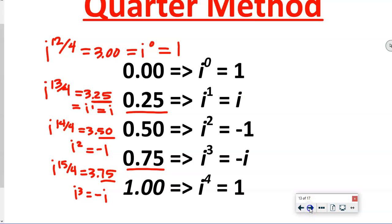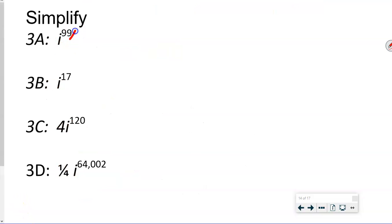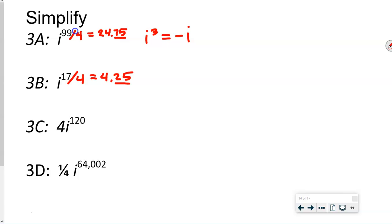Let's do a few examples. For i to the 99th, divide 99 by 4 and get 24.75 — the 75 cents means i to the 3rd, which equals negative i. For i to the 17th, divide 17 by 4 and get 4.25 — 25 cents is i to the 1st, which is simply i. For 4 times i to the 120th, divide 120 by 4 and get 30.00 — no change, so i to the 0 is 1, and 4 times 1 equals 4.